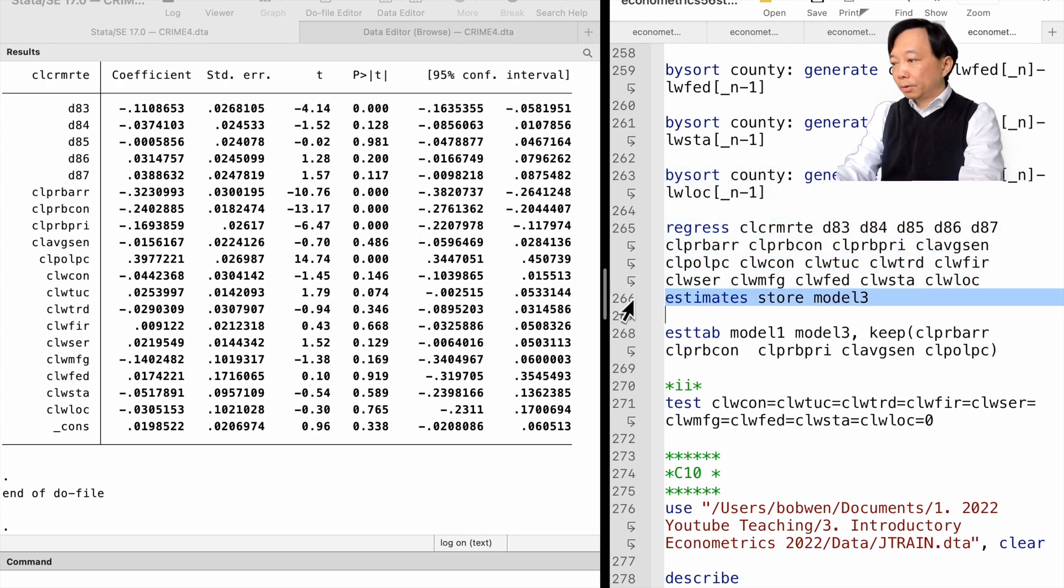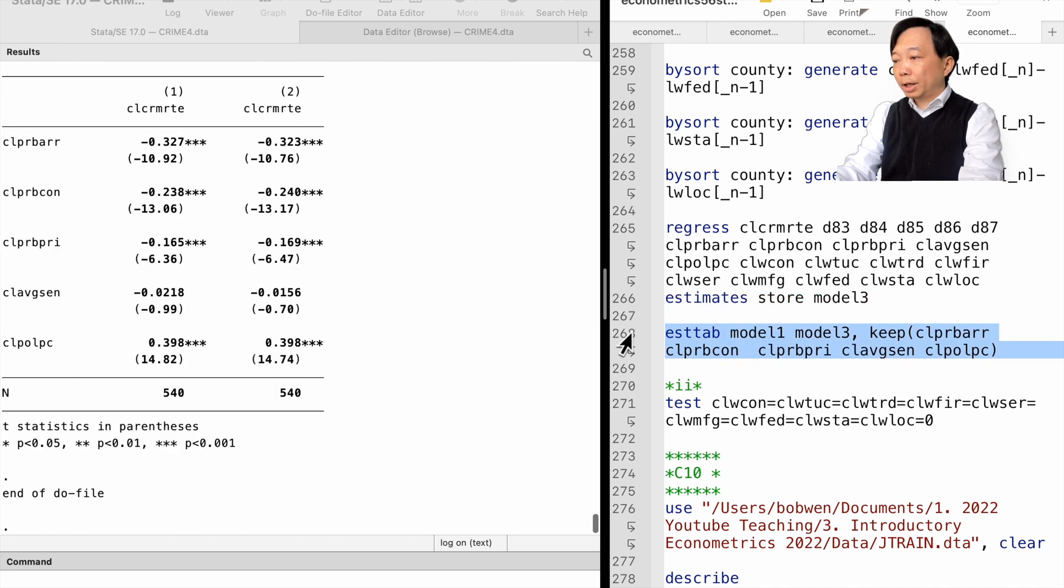Including the first differenced variables does not change the coefficients on the criminal justice variables much. From the table, we see that the coefficients only change slightly after adding the variables. It does not affect the significance either.